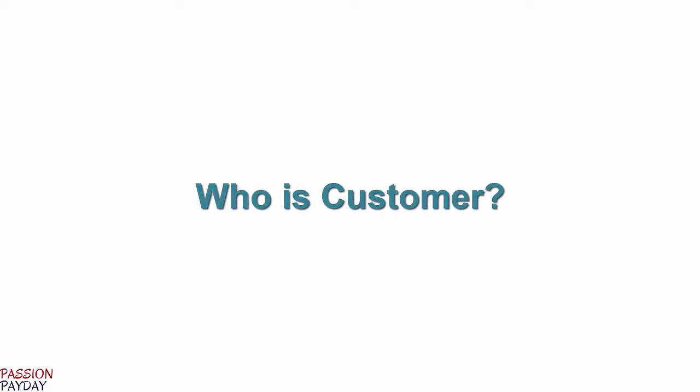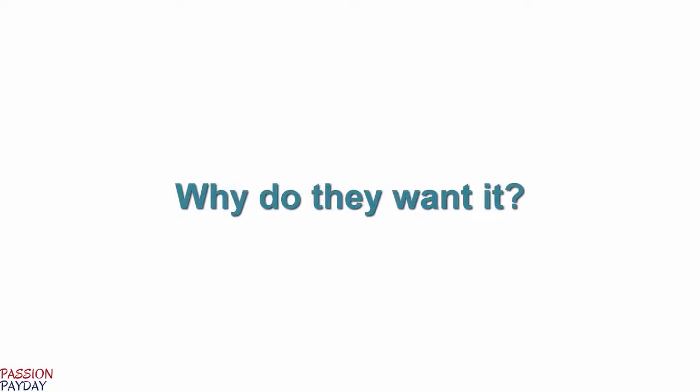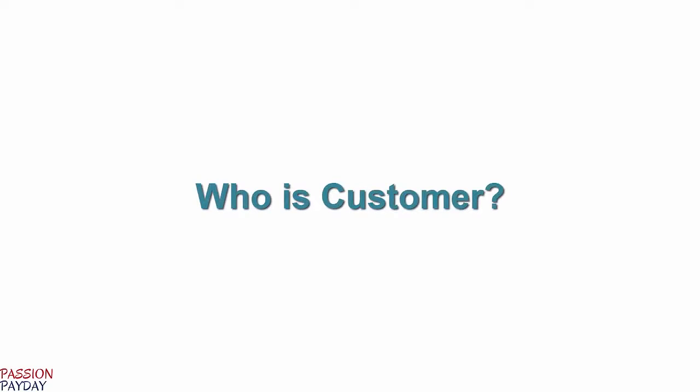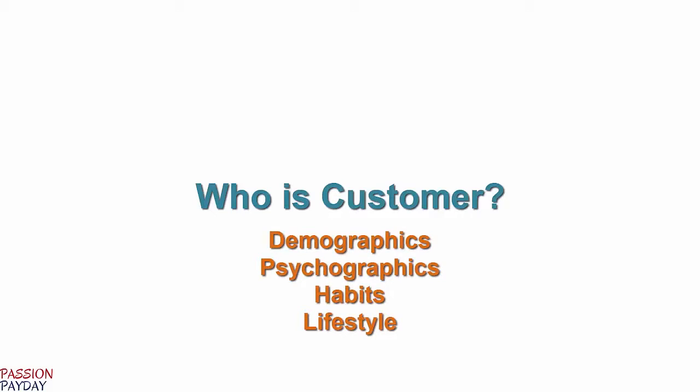One: who you are selling to. Two: why they would want what you are selling. And three: where are they likely to see your message. Let's first consider the who — the kind of person your product or service would most be able to help. What is their gender? How old are they? Are they married or single? How much money do they make per year? Do they have children, and if so, what are the ages of those children? What kind of work do they do? Where do they shop? What is their favorite social media platform? What newspapers or blogs do they read? Record in the workbook as many details as you can think of about the person you imagine would want to buy your offering to meet one of their core needs.